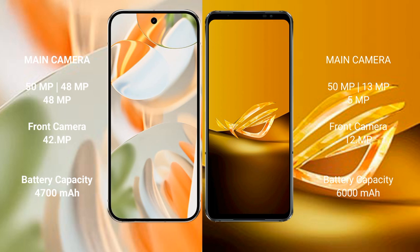Google Pixel 9 Pro features a rear triple camera setup of 50MPs, 48MPs, 48MPs, and a front camera of 10.5MPs, 10.5MPs, 20MPs. Asus ROG Phone 6D rear triple camera setup is 50MPs, 13MPs, 5MPs, and a front camera of 12MPs.